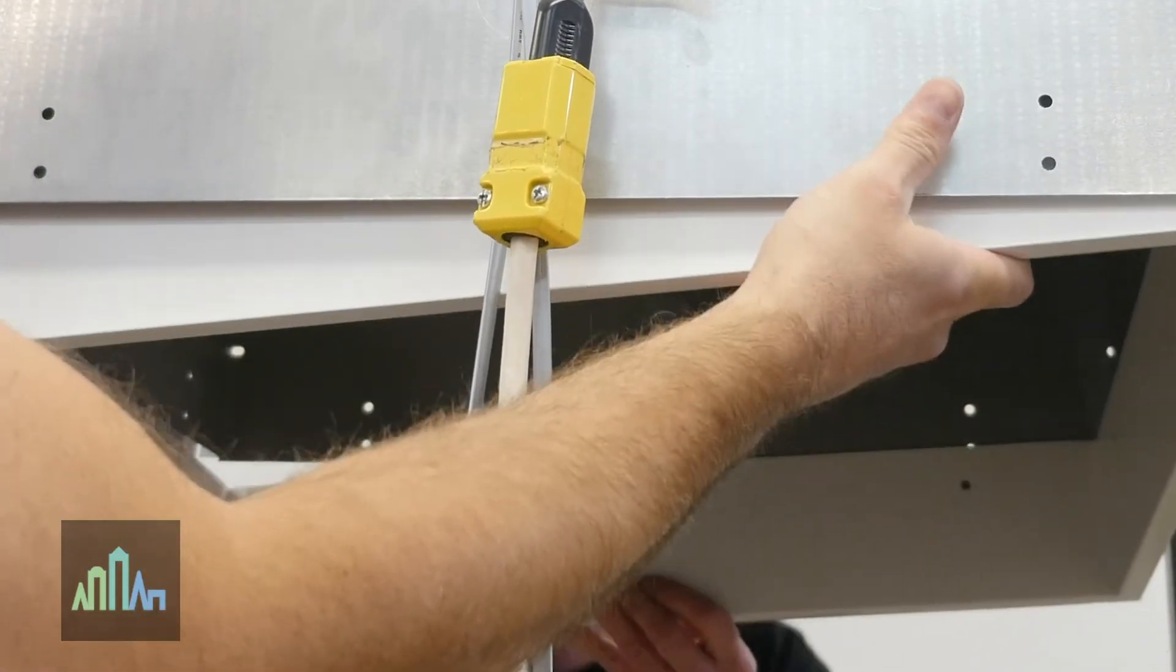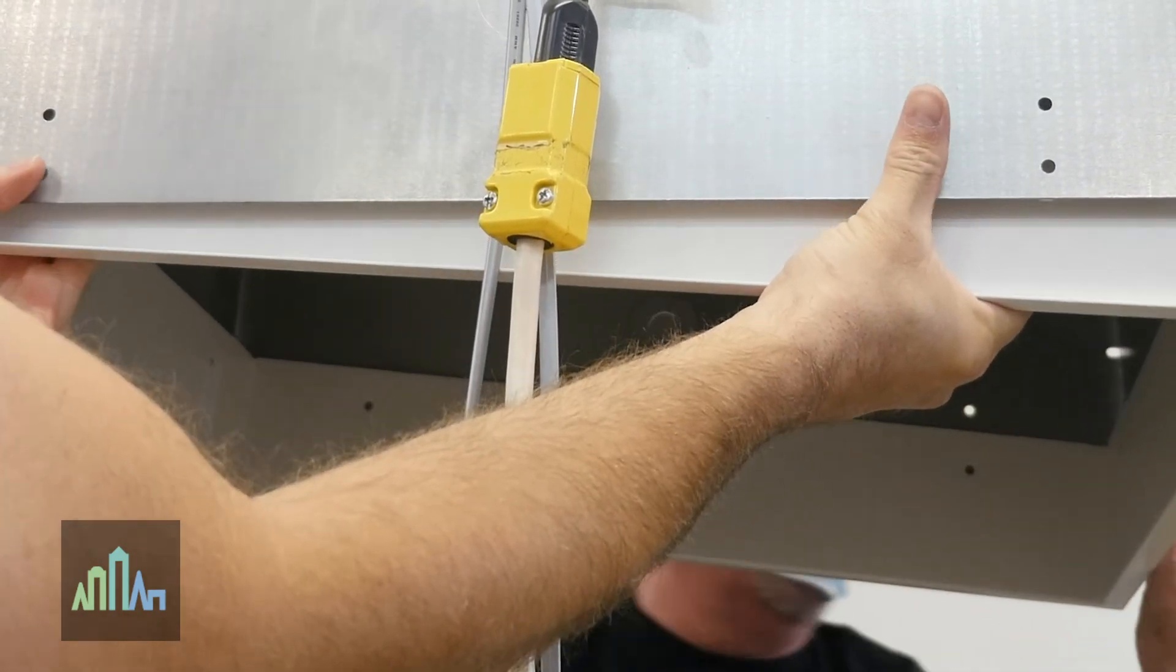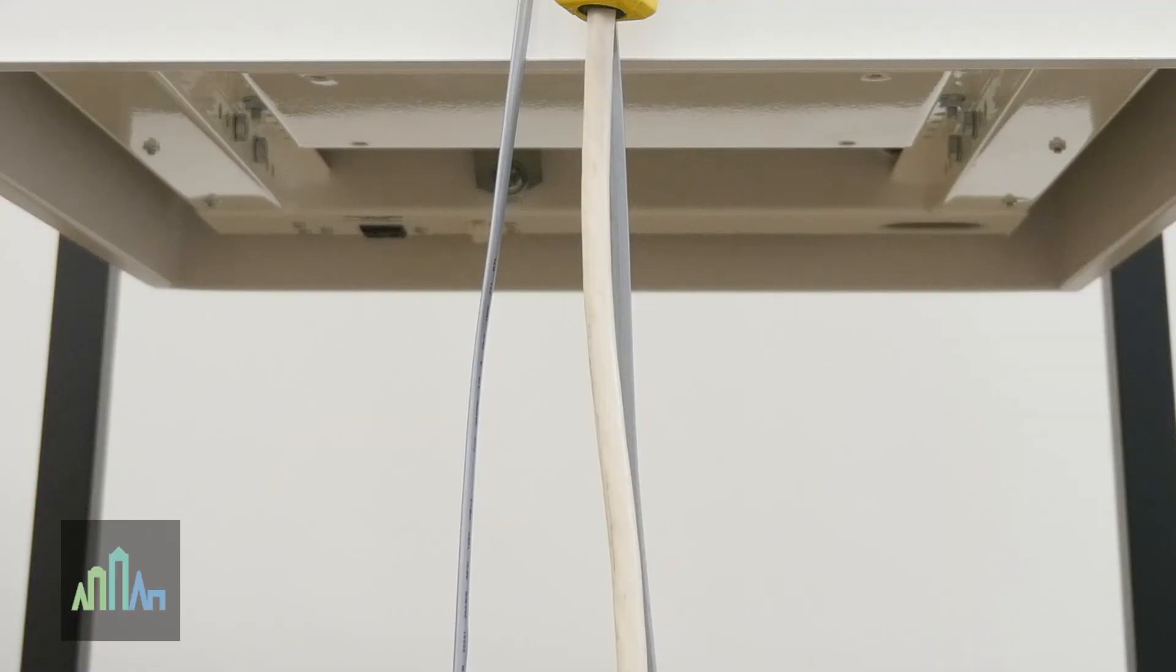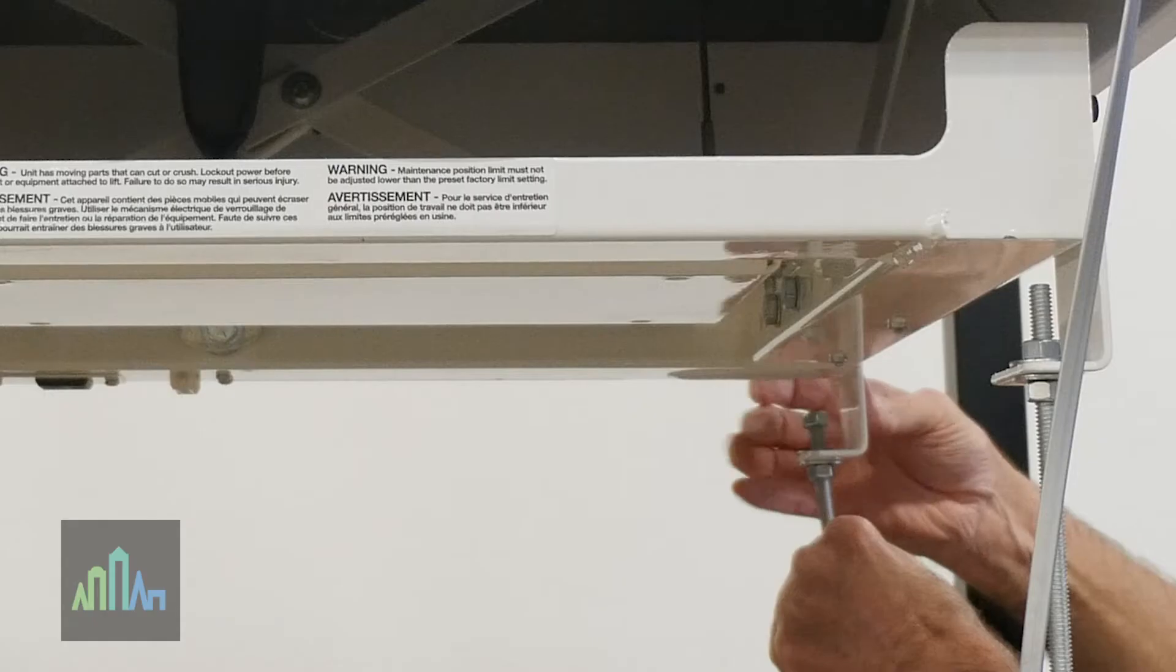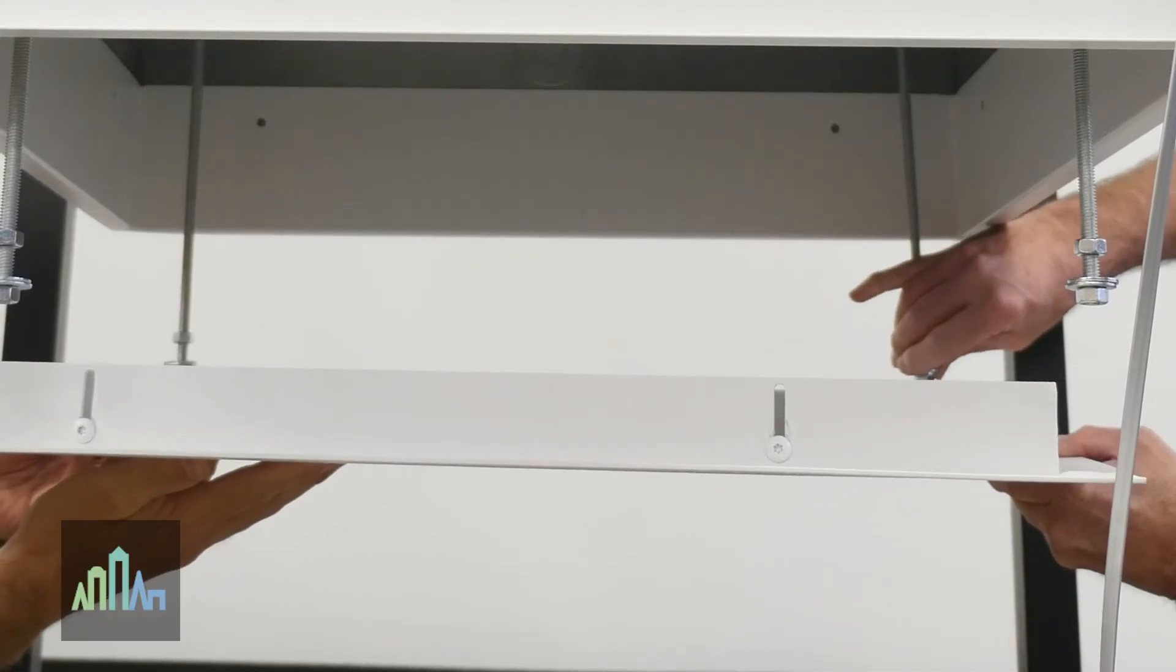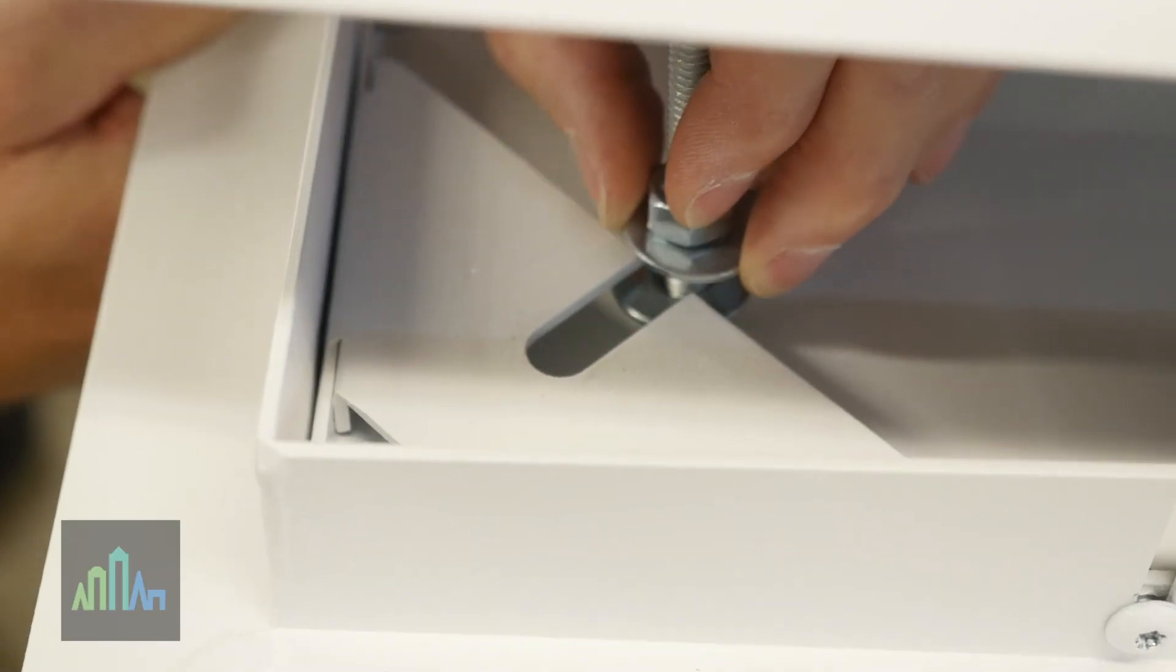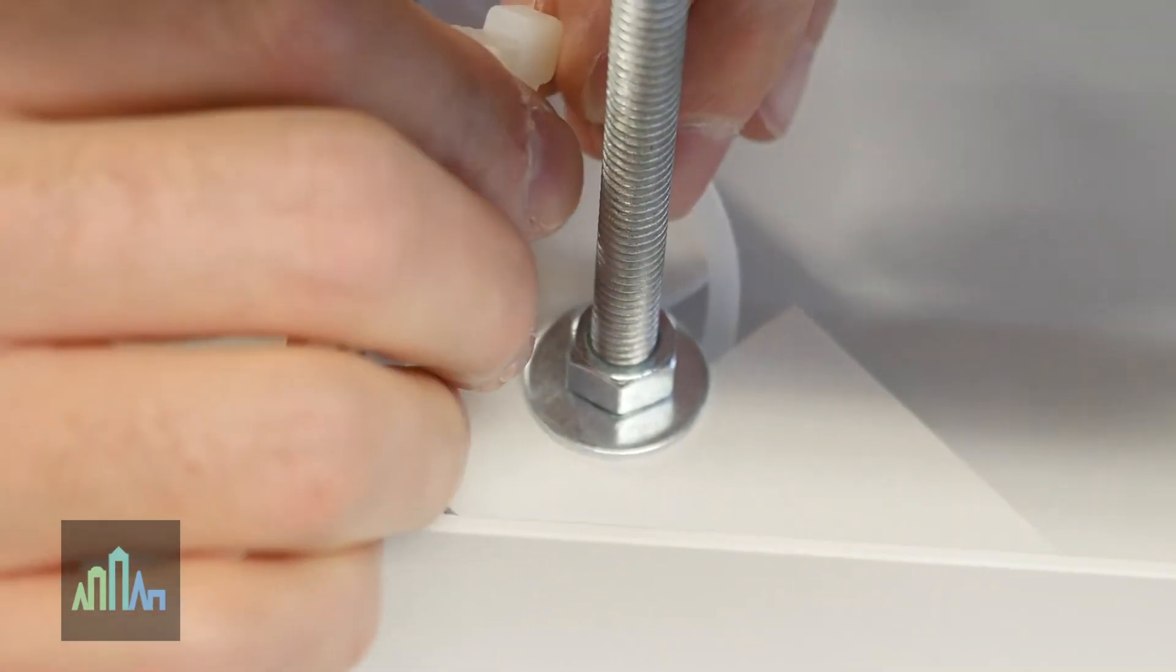Attach the trim ring to the bottom panel of the environmental housing and secure using a washer and nut. To complete hardware installation, lower the ScissorLift and attach the assembled closure panel. Once the nuts on the threaded rod are tightened, use zip ties to secure the position of the threaded rod to the closure panel.